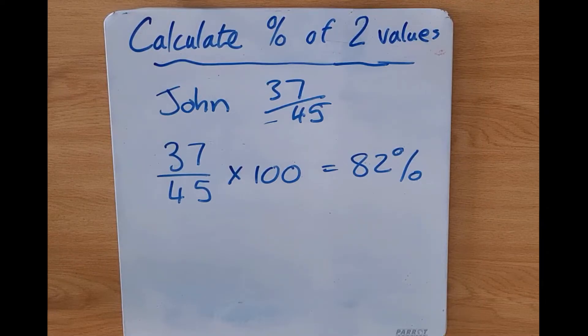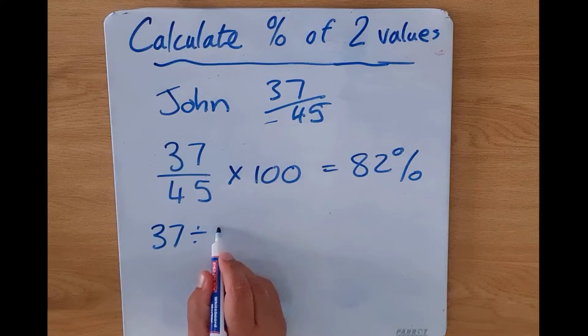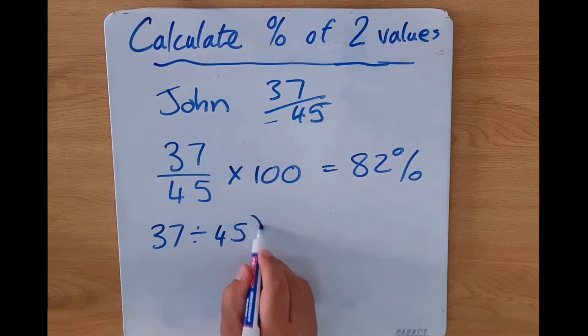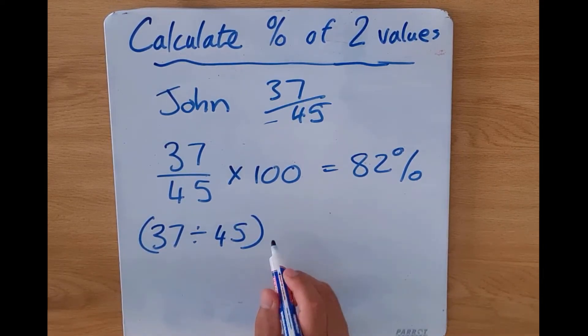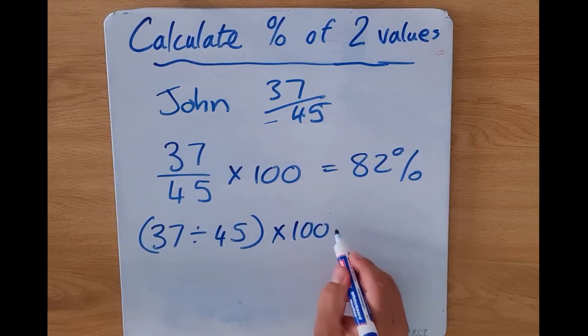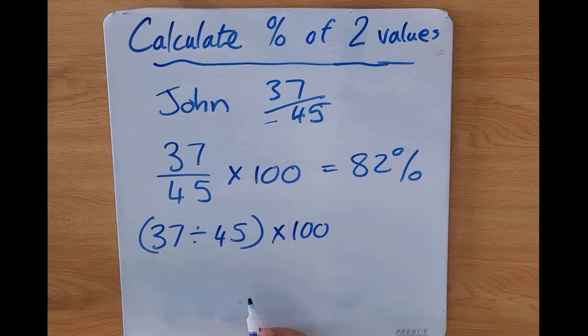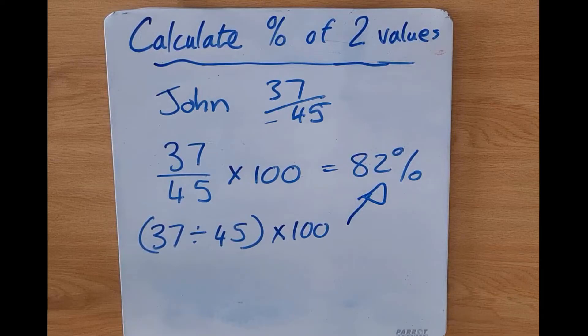Now you might ask but how? It's simple. We're going to take 37, we would divide it by 45, and whatever our answer is we would end up multiplying that by 100, and this is how we end up getting our answer of 82 percent.